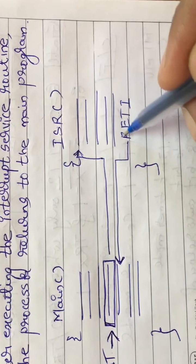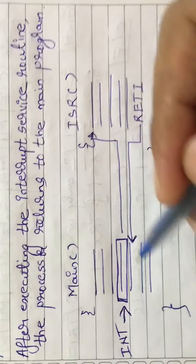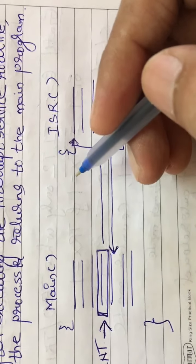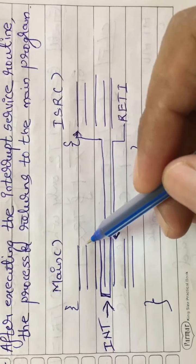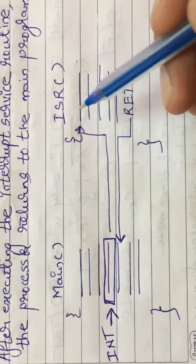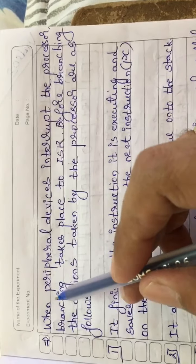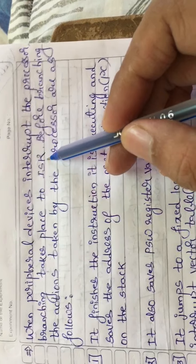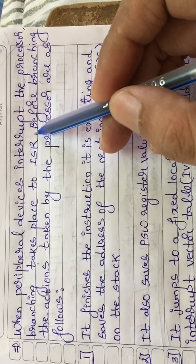Here I have drawn a diagram so that these statements will be very clear and the concept of interrupt will be more clear. The main program starts with a bracing and has some instructions written. In between, while execution of the main program, if there is an interrupt which occurs, at that instant of time the microcontroller will complete whatever instruction it is currently executing. Then it will take the address of that particular interrupt and jump or branch to that particular routine.